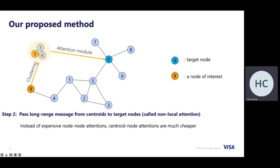For example, with target node 0 and node of interest 9, in the original local GNN we pass messages from node 9 through nodes 4, 1, 5, to node 0. In our framework, we pass messages from node 9 to the centroid, and then use attention mechanisms to pass messages from the centroid to the target node. Instead of expensive node-to-node attention, we use centroid-to-node attention, which is much cheaper.